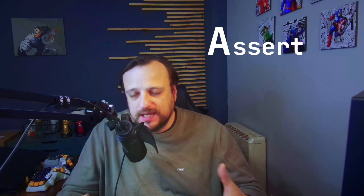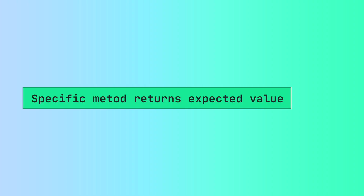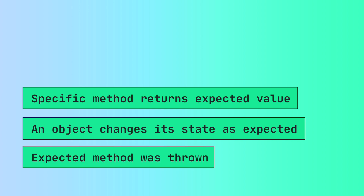The goal of the act phase is to get an output that is verifiable in the next stage, which leads us to the final A: assert. Here is where you verify the outcome from your automated test and make sure that it matches your expected results. Usually this involves using some sort of assertion method and comparing the actual value with the expected one — for example, making sure a method returns the expected value, that an object changed its state as expected, or that an expected exception was thrown during execution.